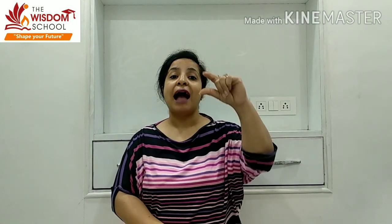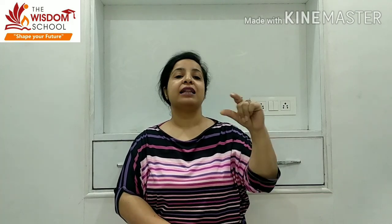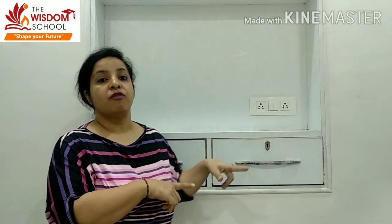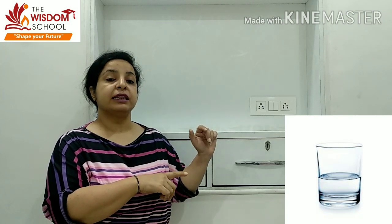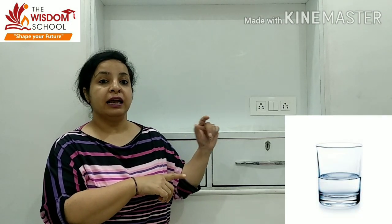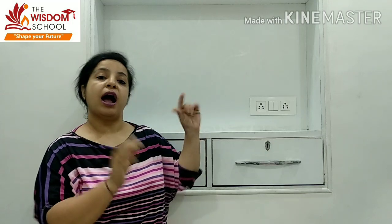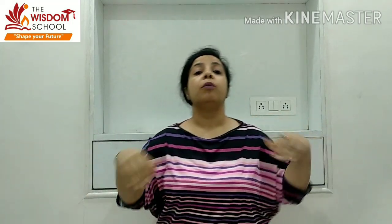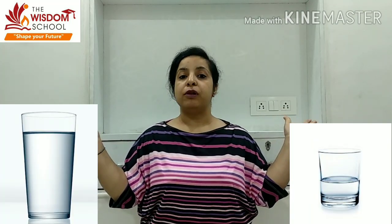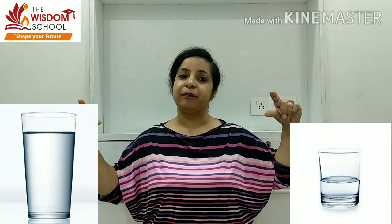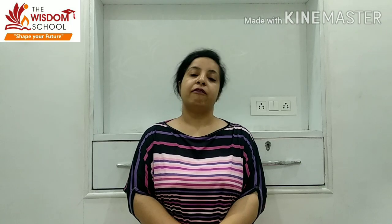Our next word is half. Half means aadha. Now look at the picture of half. Dekho, aapko ek glass dikh raha hai. Us mein paani jo hai, wo bharah hua hai? Nahi — kitna hai? Half glass hai na? Half glass of water hai. Very good. Full means bharah hua, half means aadha. Now look at both pictures — full and half. Full means bharah hua, half means aadha. Clear? Achhe se samajh mein aaya aapko? Very good.